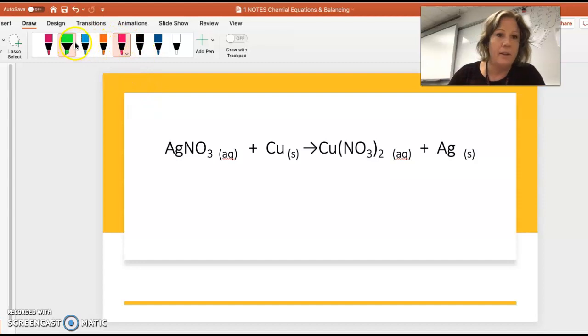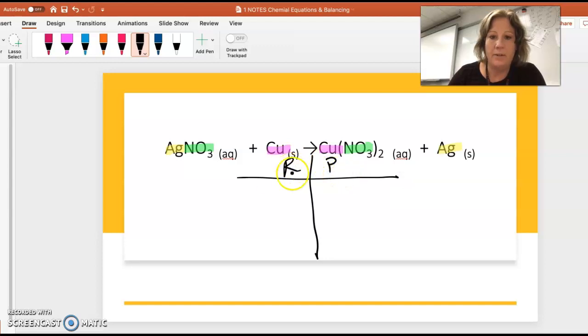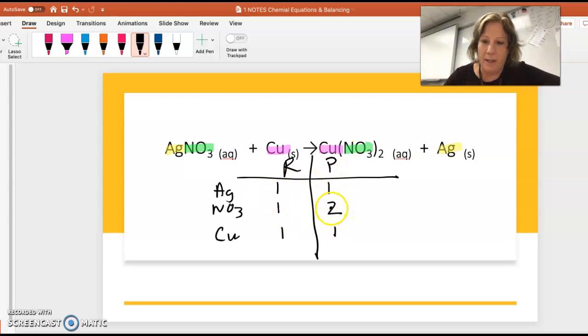Here's another example with highlighting. I have silver nitrate and copper. I'm going to do the T-chart this time - reactants and products. I have silver, nitrate, and copper. You don't have to show your work, but some of you are really visual and might want to use this. You can see that the nitrate is unbalanced. I want to have two, so I have to put a two here. That also changed my silver to two, so then I have to go back and put a two here. And then I'm done.